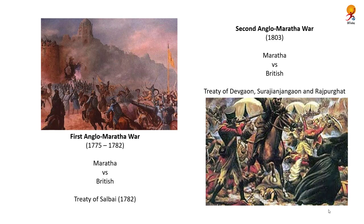However, the then Governor-General of Bengal, Warren Hastings, rejected the Treaty of Wadgaon. Under the leadership of General Camac, they defeated the Marathas led by Sindhia, and the Treaty of Salbai was signed in 1782.